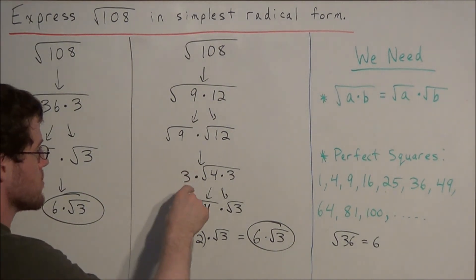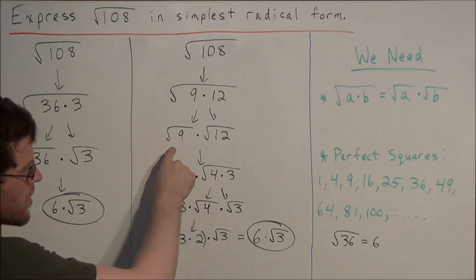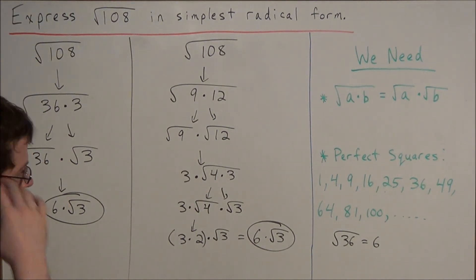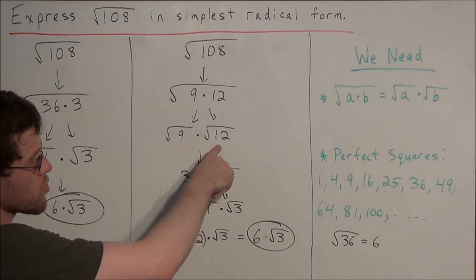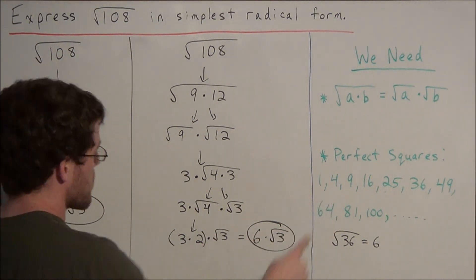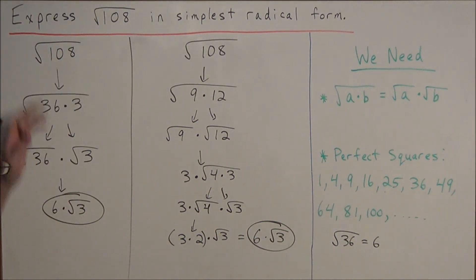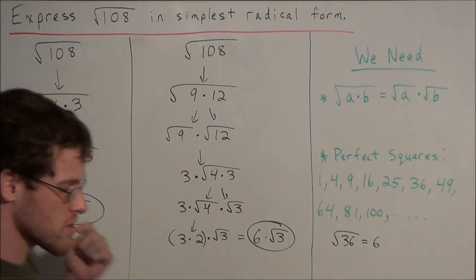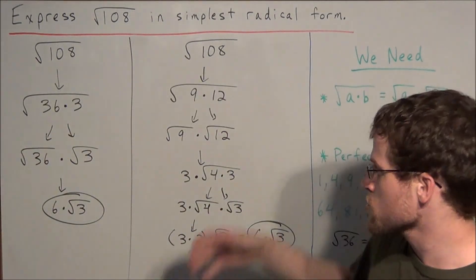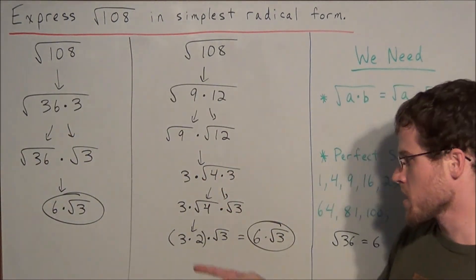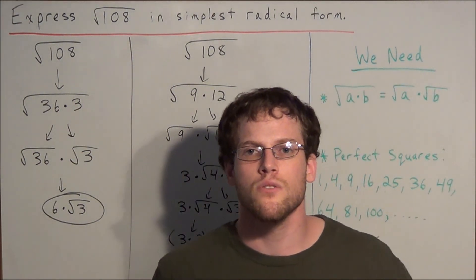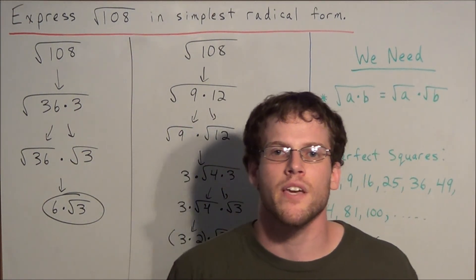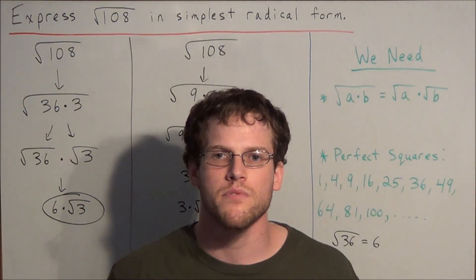We do need to be careful — at the step where we have the square root of 9 times the square root of 12, we need the insight to know that we have to factor 12 further using 4 and 3. So if we can choose the greatest perfect square factor, it'll save us time. Otherwise, as long as we keep finding perfect square factors, we'll get to the same answer. This concludes this simplifying radicals problem. Thank you all for watching, and I hope this video was helpful.